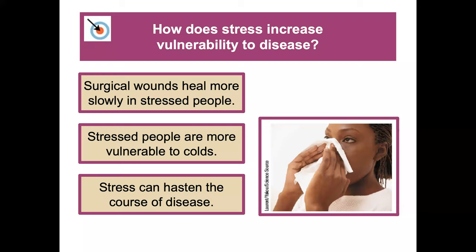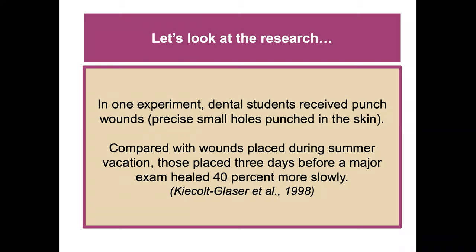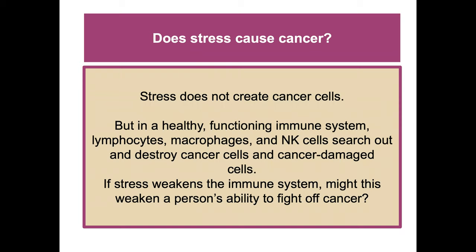How does stress increase vulnerability to disease? Surgical wounds heal more slowly in stressed people. Stressed people are more vulnerable to colds. Stress can hasten the course of a disease. Being stressed, especially over long periods of time, can significantly weaken your immune system and make you more susceptible to illness. When researchers dropped a cold virus into people's noses, 47% of those living stress-filled lives developed colds. In one experiment, dental students received punch wounds — precise small holes in the skin — and those placed three days before a major exam healed 40% more slowly than those placed during summer vacation.